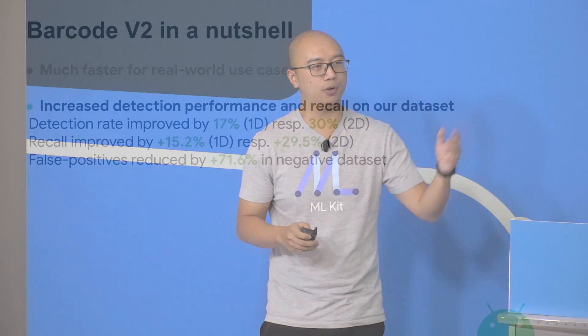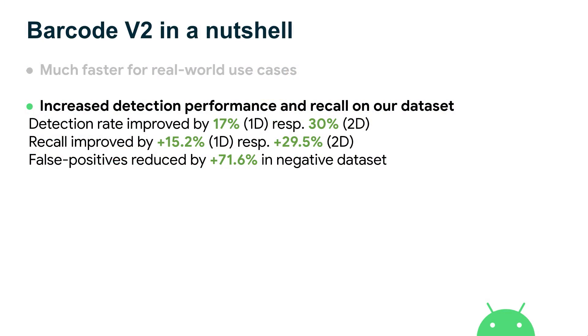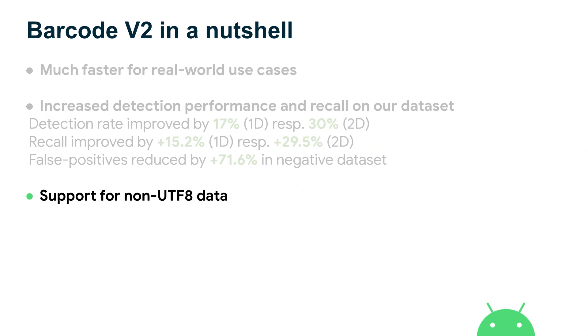So in this example, we added two more steps to the pipeline but actually reduced latency and improved accuracy. The internal benchmark shows almost two-digit improvements across all metrics. Additionally, Barcode V1 did not support non-UTF-8 formats, but in V2 we added an API to support non-UTF-8 formats — another request from GitHub.